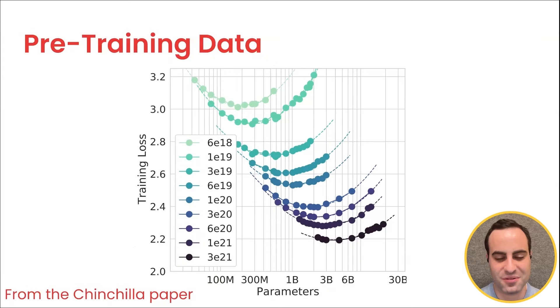On the x-axis is the number of parameters in a model, so as you get further to the right, the models get bigger. Each of these points is some model that was trained. On the y-axis is the training loss, so how well did the model do. Lower is better—lower loss means you got a better model.